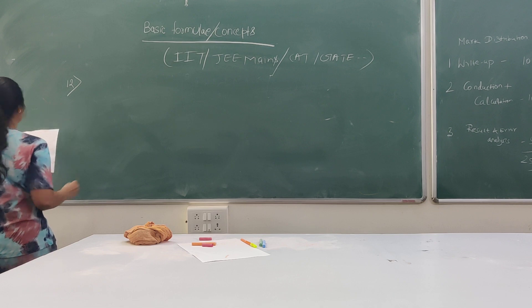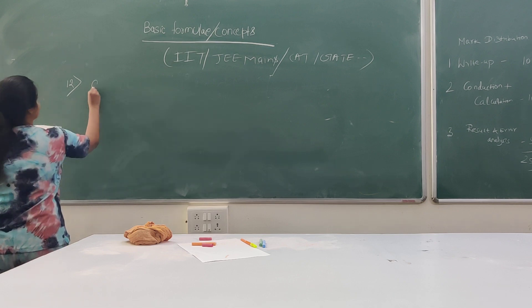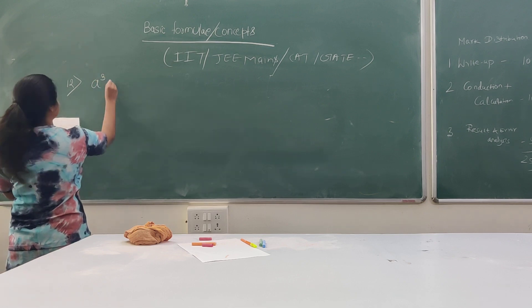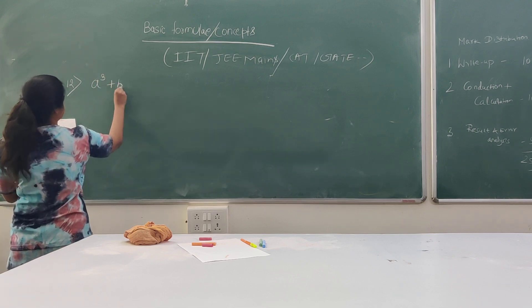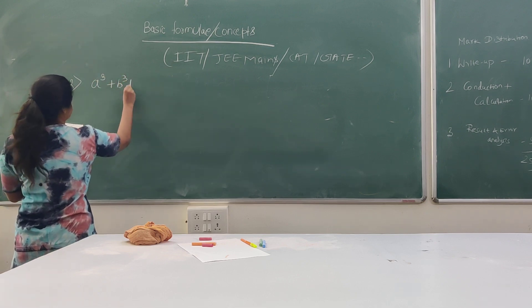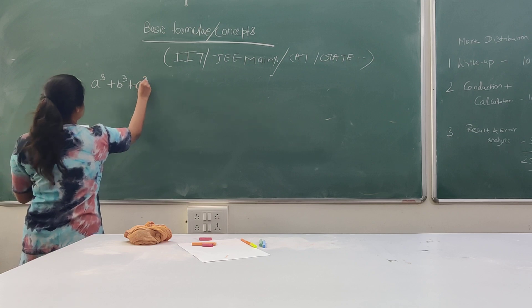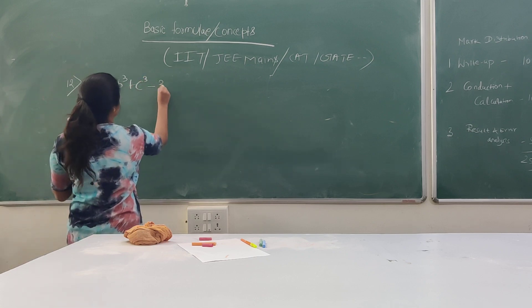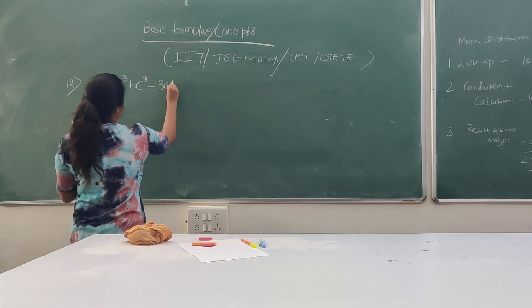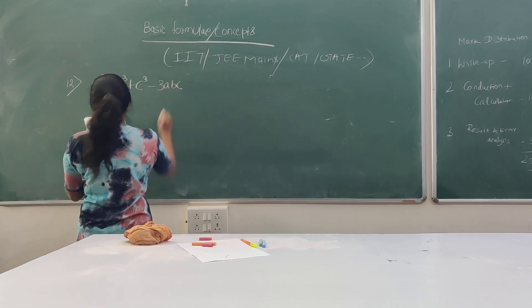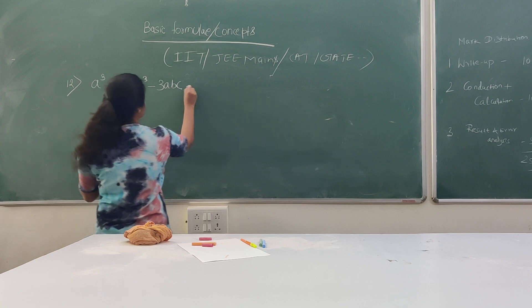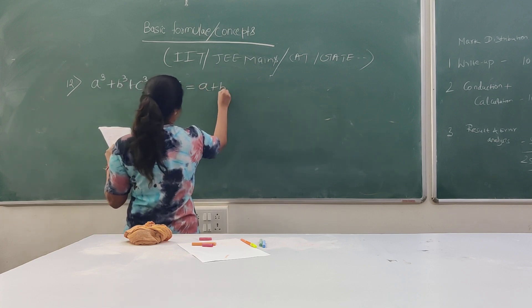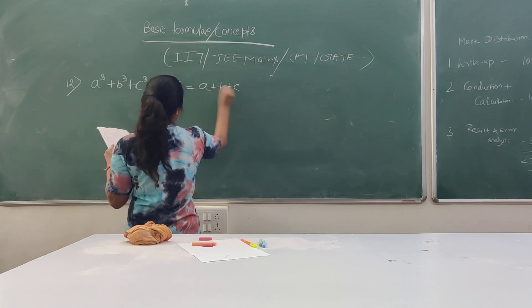Let's do it now. AQ plus BQ plus CQ minus 3ABC is equal to A minus B minus C.